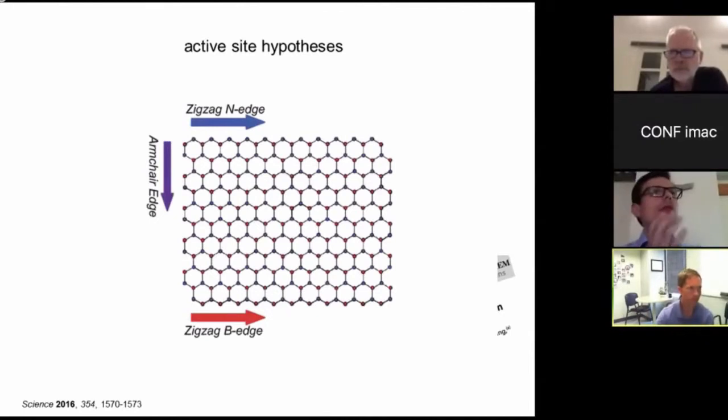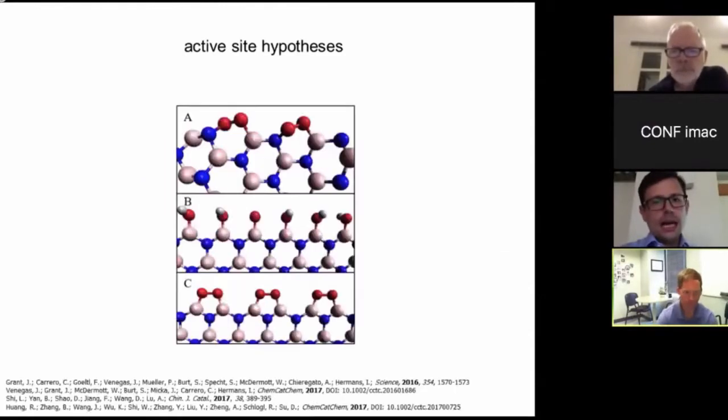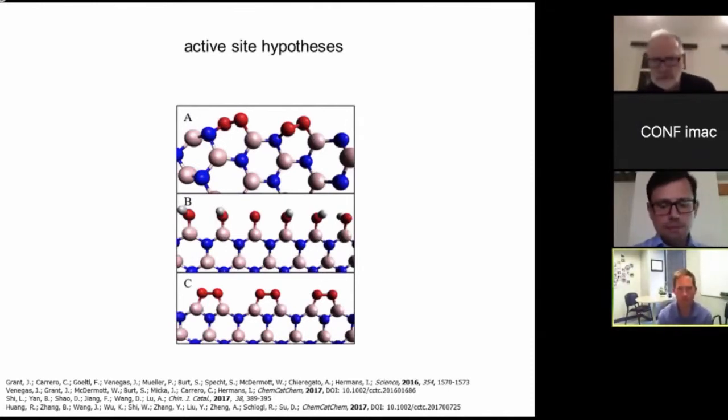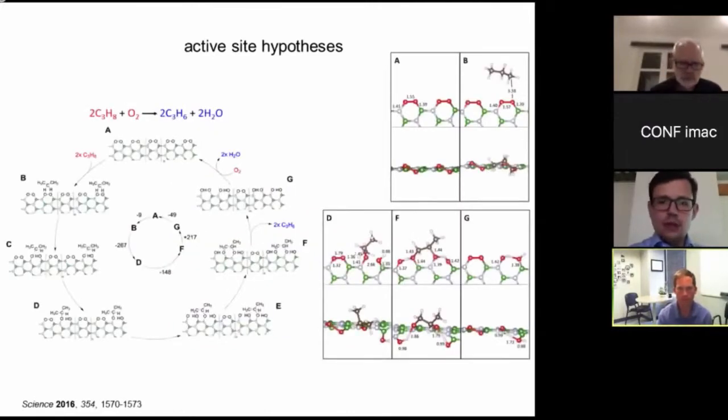If you look at boron nitride shown here, you have both armchair edges and zigzag edges on this material. Based on literature from the material science community, we argued that armchair edges would be more exposed under these conditions. So we went on and see how we can activate oxygen on those armchair edges. So that's figure A here. Other people in the literature, they do agree that oxygen needs to be activated on the material. They proposed either oxygen activation on these zigzag edges, figure C, or hydroxylated sites in the middle of the figure here. Either way, there is a consensus that you need some sort of oxygen on the surface.